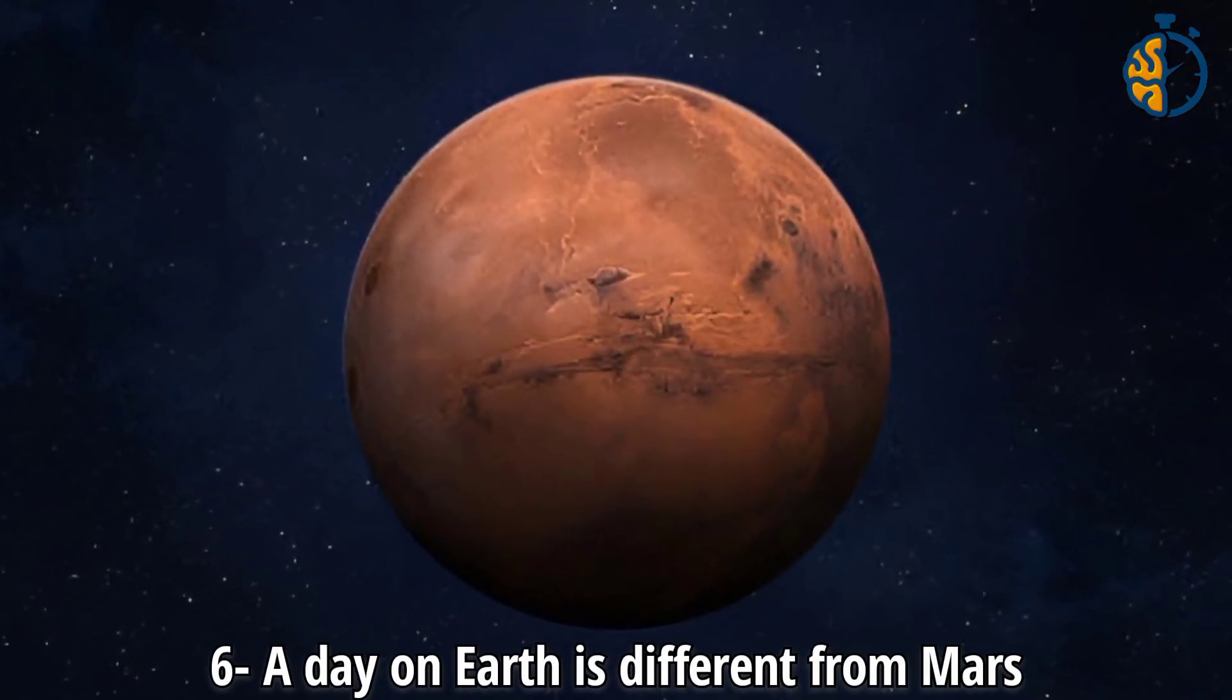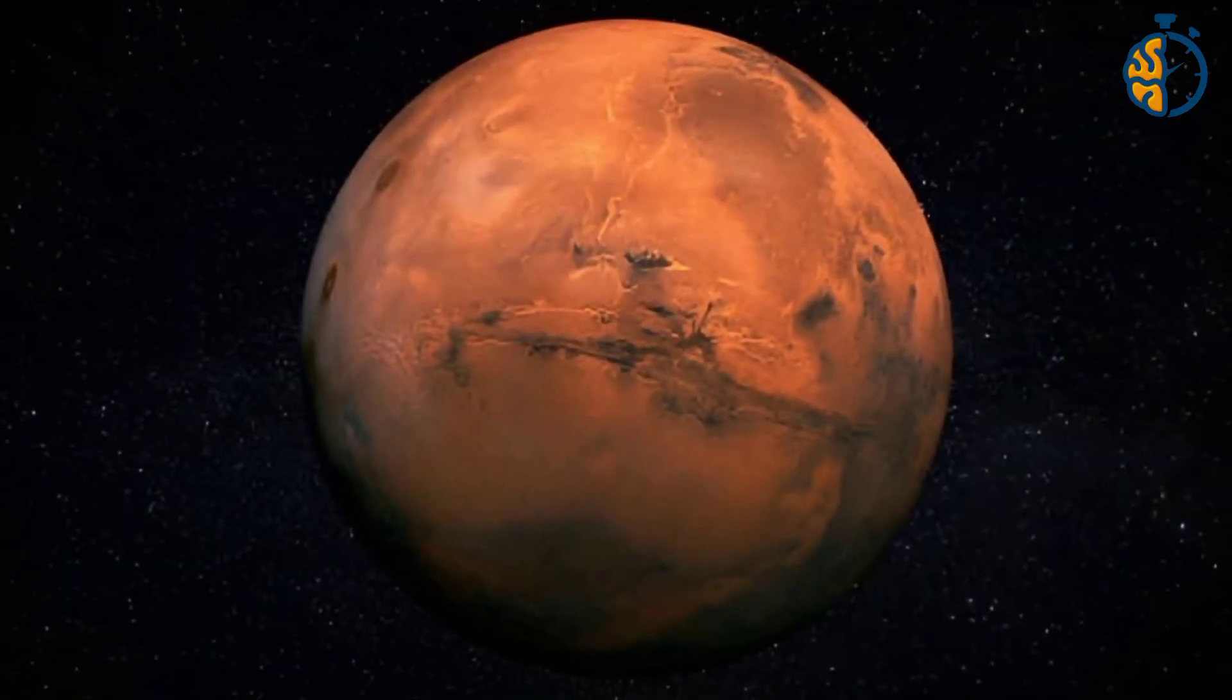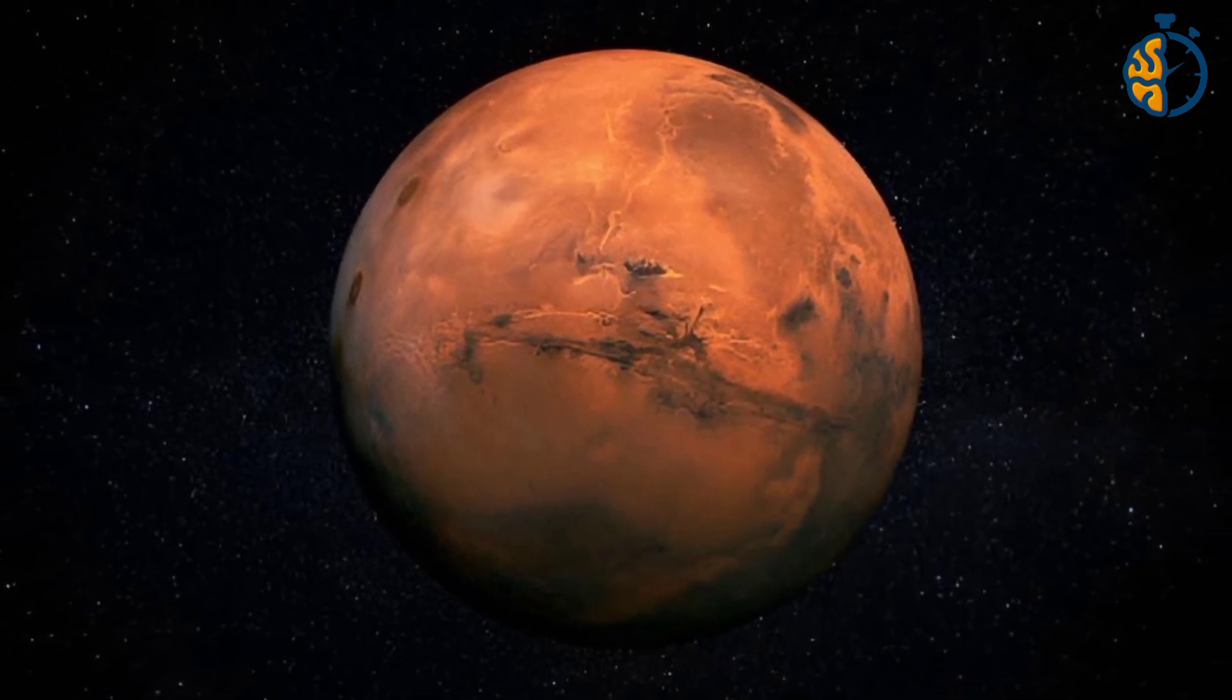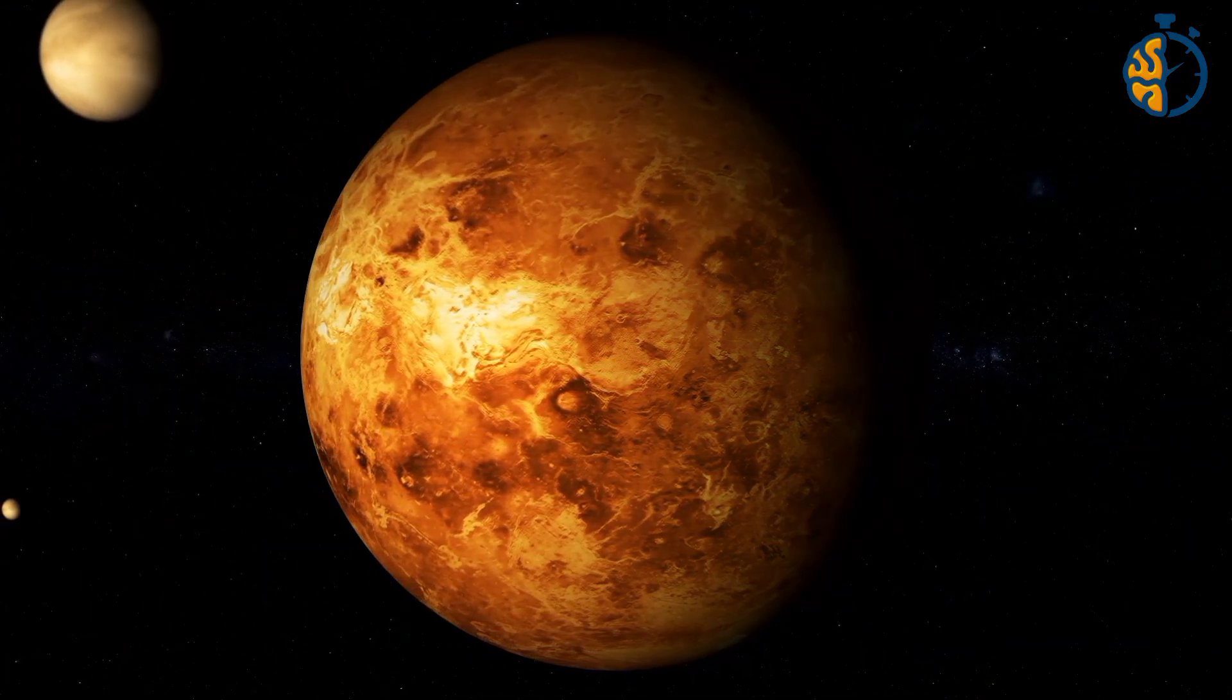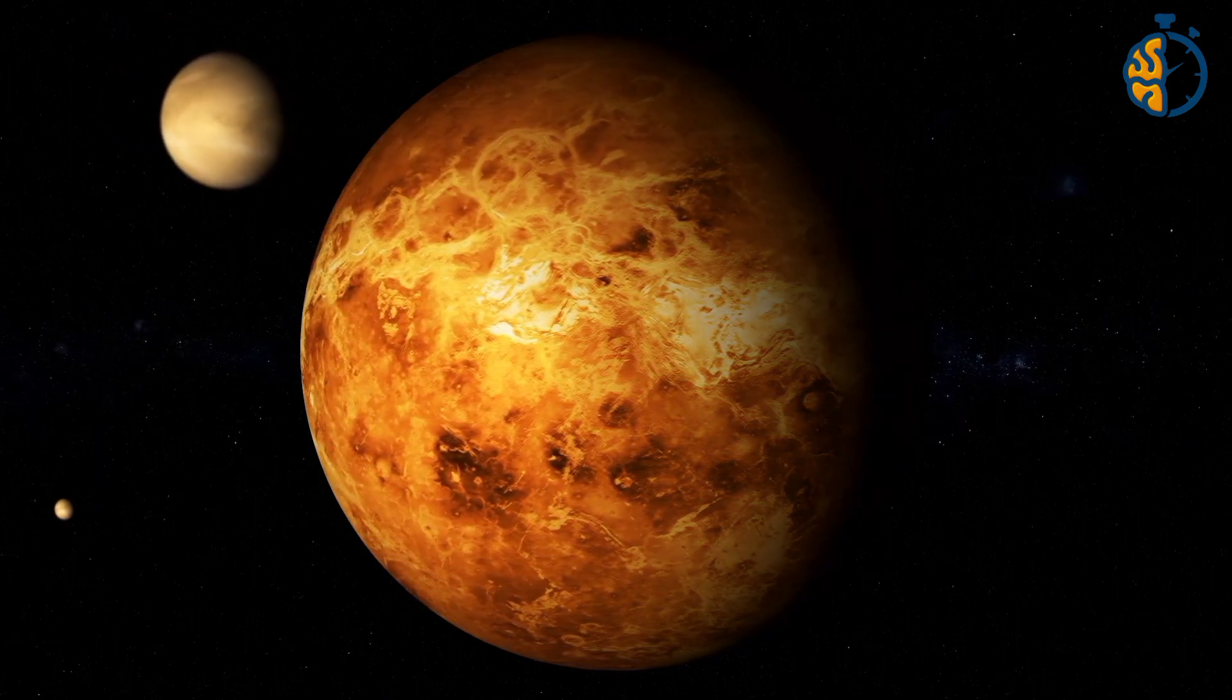Number 6. A day on Earth is different from Mars. One year on Mars consists of 687 Earth days, which is nearly twice the year on Earth, while a day on Mars equals 24 hours and 40 minutes.